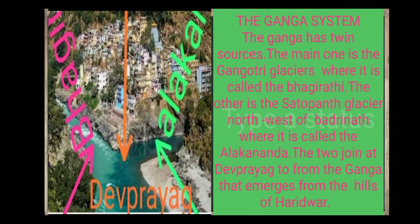The second Himalayan River system is the Ganga. The Ganga has twin sources: the main one is the Gangotri Glacier, where it is called the Bhagirathi. The other source is the Satopanth Glacier, northwest of Badrinath, where it is called the Alaknanda. The two join at Devprayag to form the Ganga, which then emerges from the hills at Haridwar.